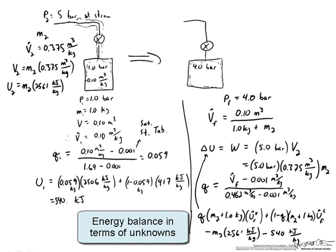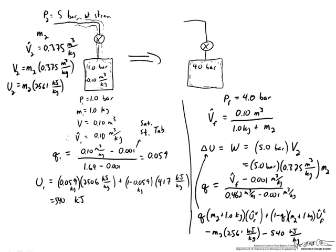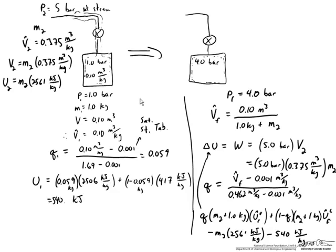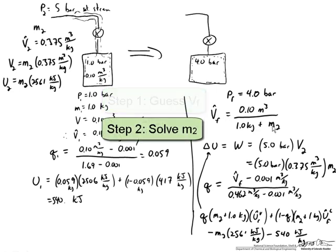We have enough equations for our unknowns, but it's a little hard to see that here. Let's outline the procedure to solve these two equations and two unknowns—the volume and delta U. We'll guess the value of V̂_F, the per mass volume. We can use that to calculate the mass that entered the tank. If we know the volume, we can solve for m₂.